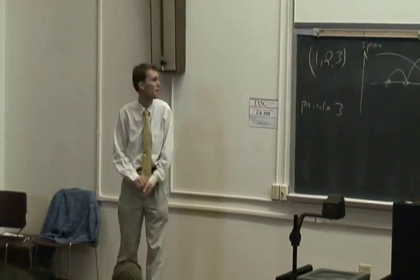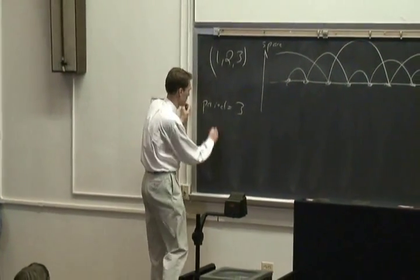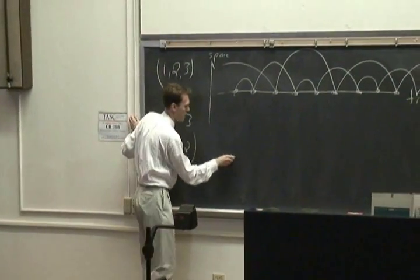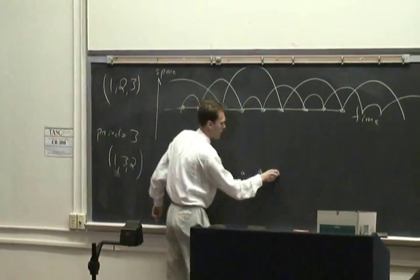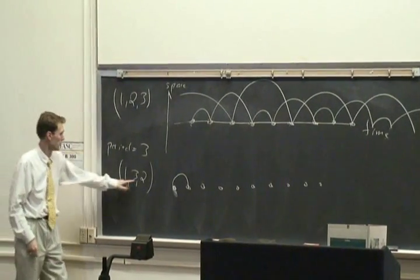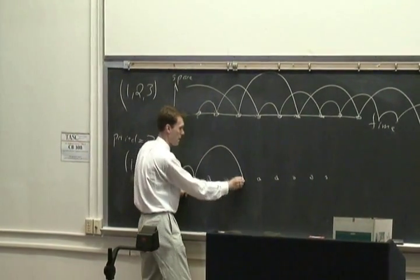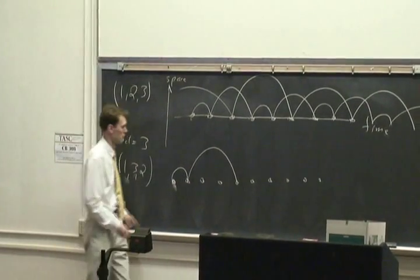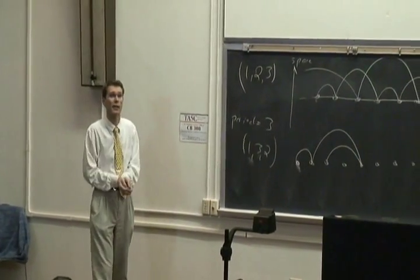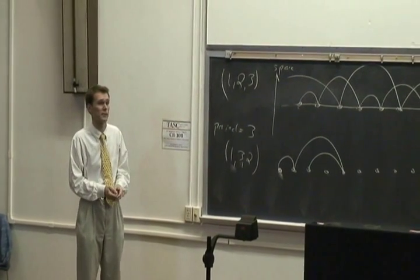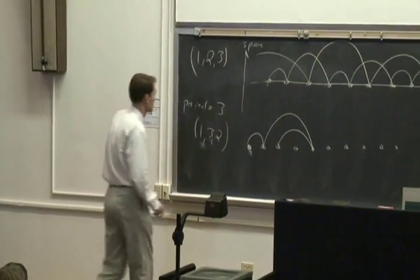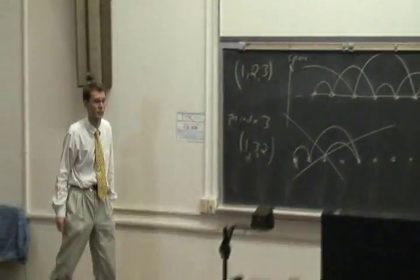To show you something that is not a juggling pattern — let's switch 1 and 3. Let's take the pattern 1-3-2. What happens? It goes to 1-throw, then 3-throw, then 2-throw, then 2-throw — and the poor juggler has to catch 2 things at the same time. That is not a valid juggling pattern. I want the juggler at each time point to catch one ball and then throw it. So 1-3-2 is not a juggling pattern.